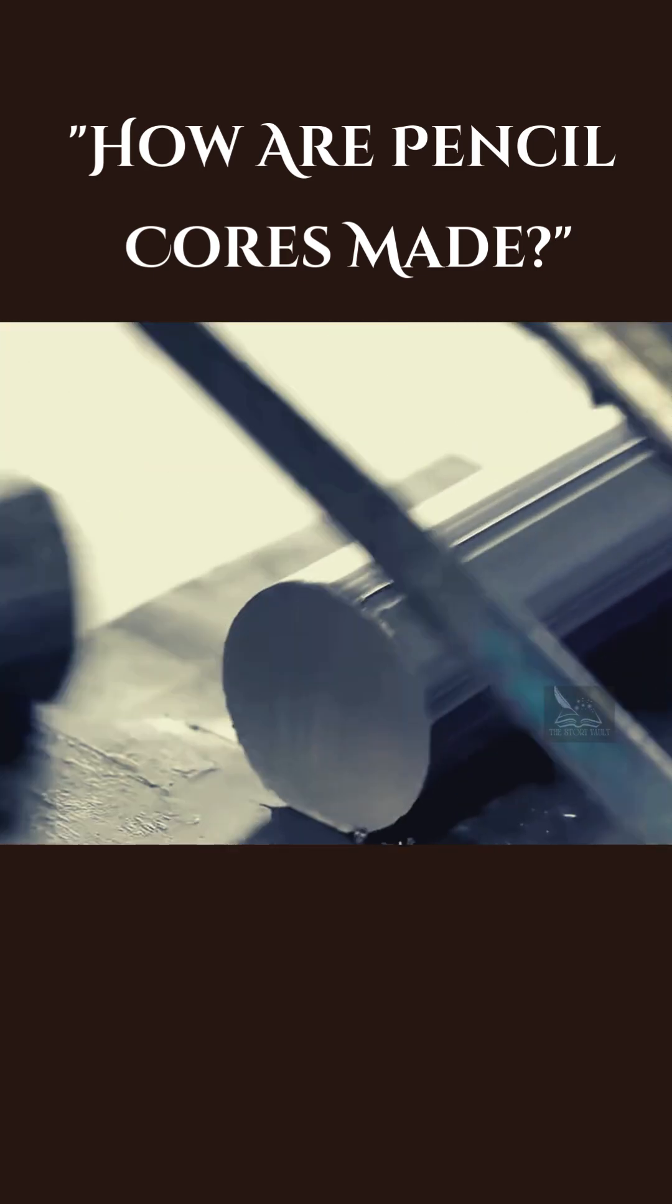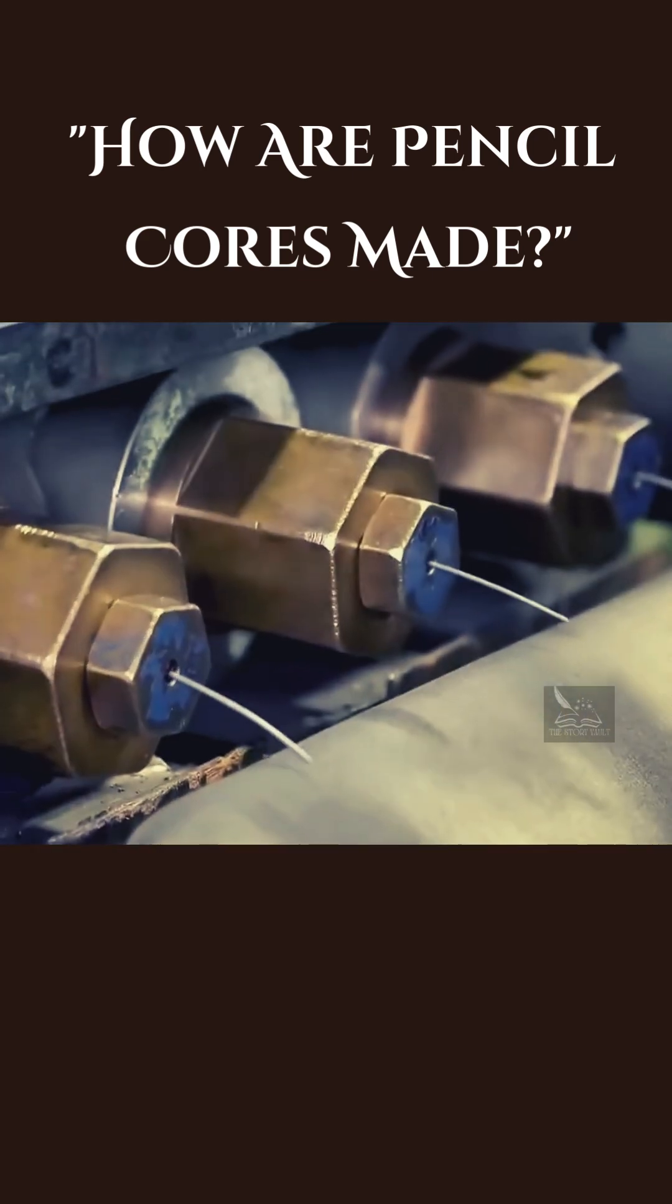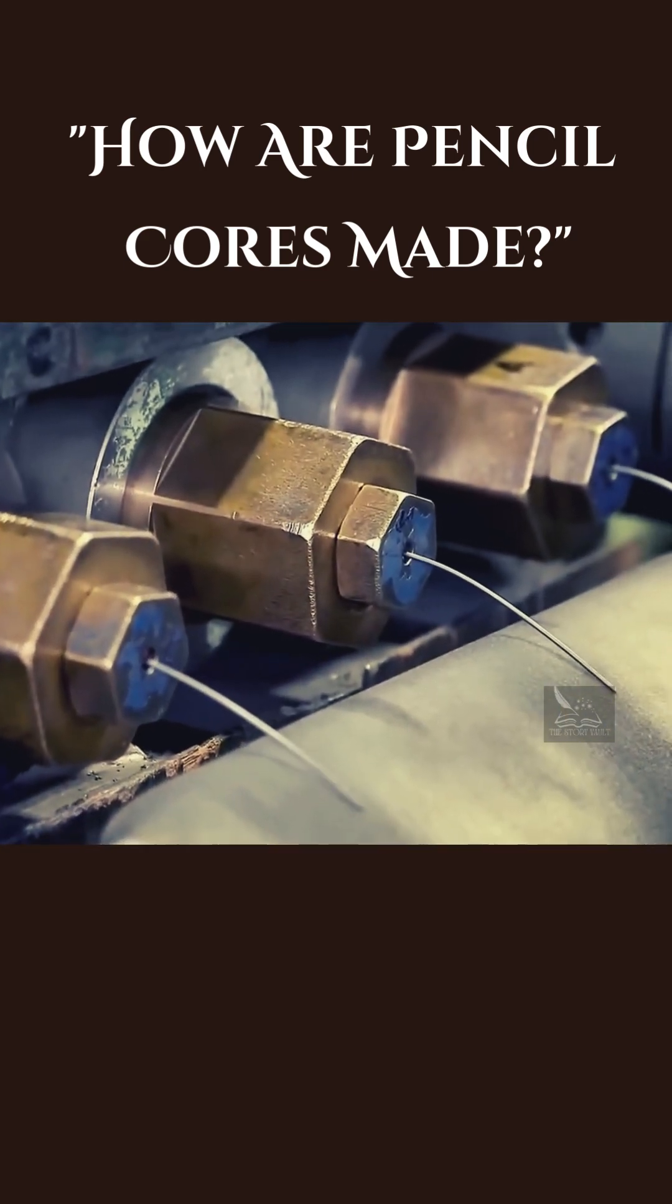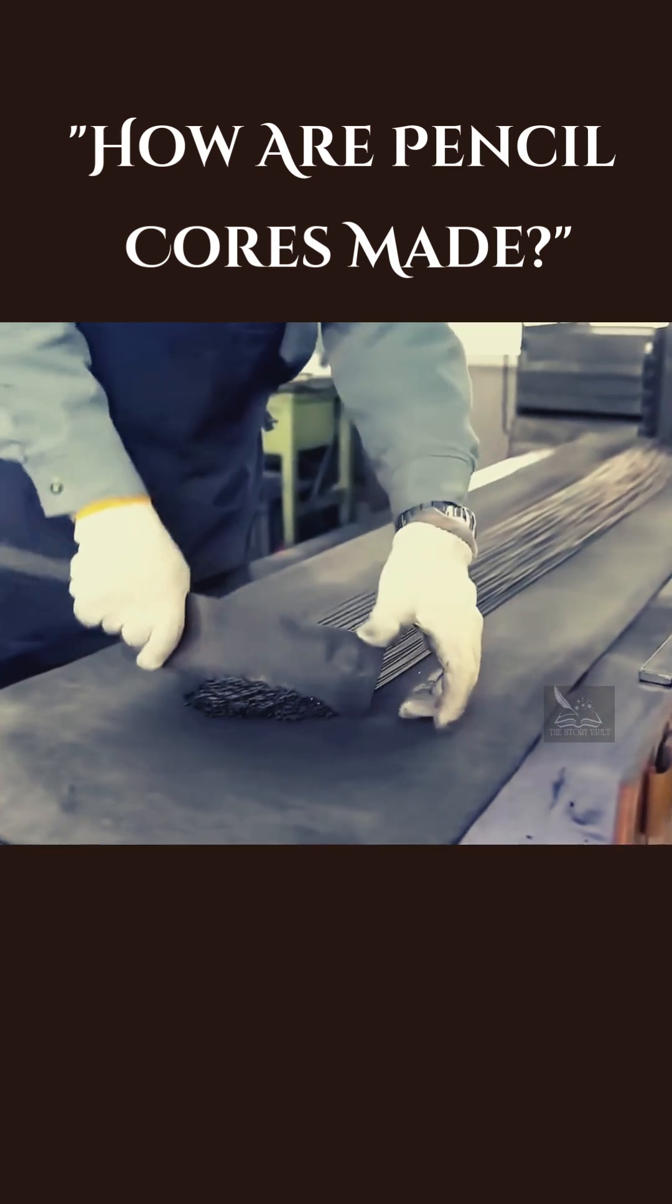This mixture is then pressed into long strips and cut into small, even pieces. These pieces are fed into another press, where they're compressed and extruded through round holes to create thin, uniform strips.